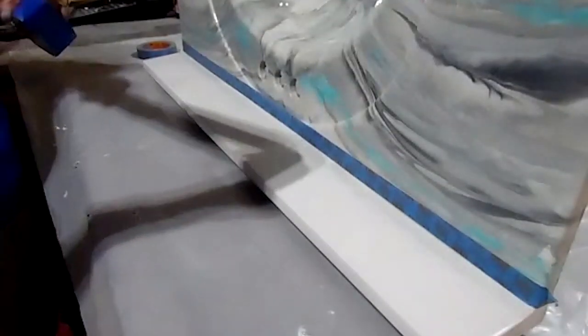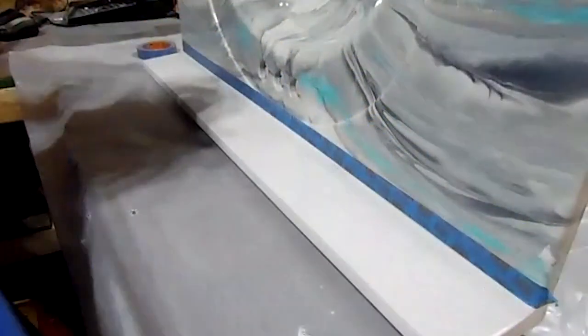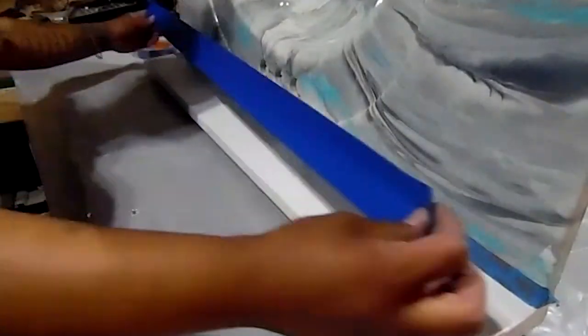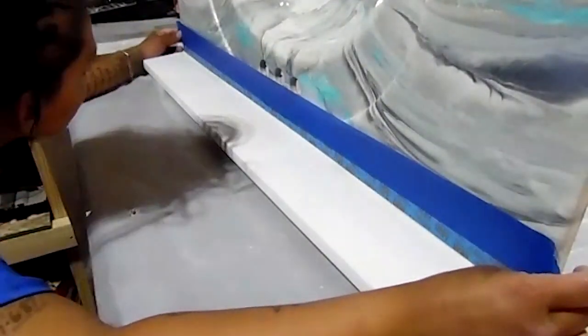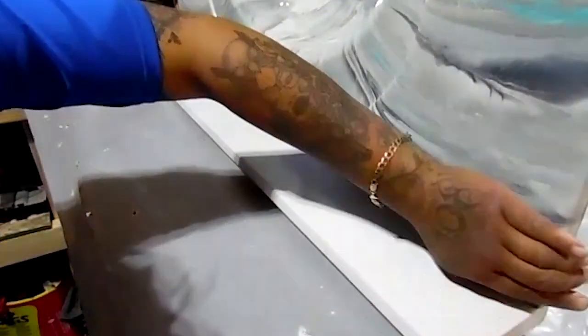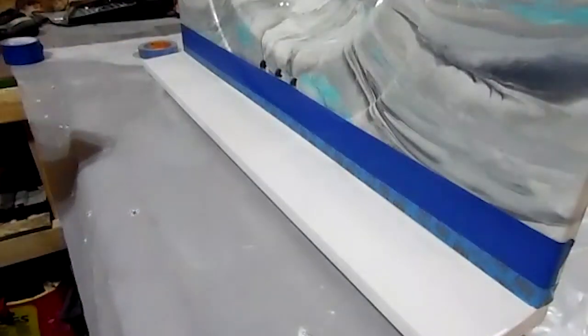I used a fine line painter's tape to get that crisp line there in the bottom, and then I just kind of went over it with plastic and masking tape to connect the painter's tape and the plastic.